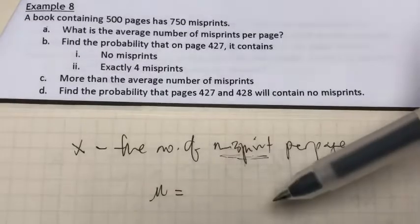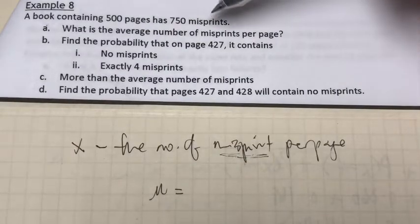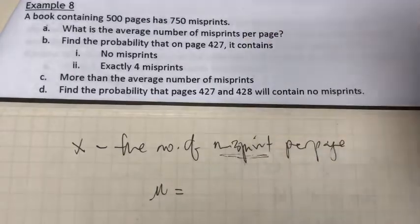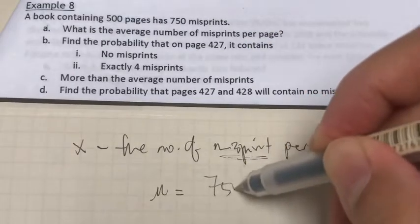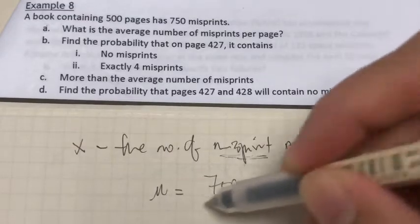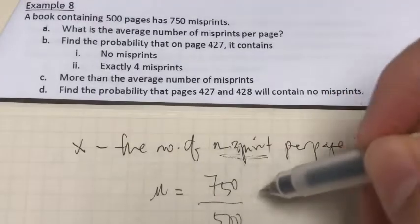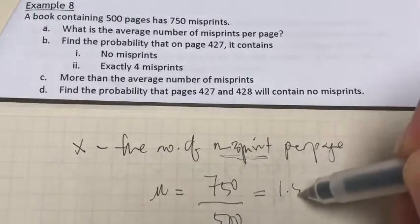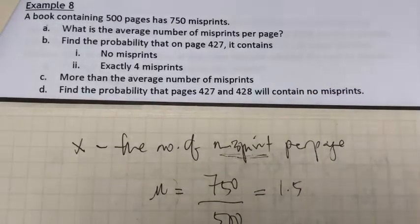For 500 pages there are 750 misprints. To find the number of misprints per page, we divide: 750 ÷ 500 = 1.5. So mu equals 1.5 misprints per page.